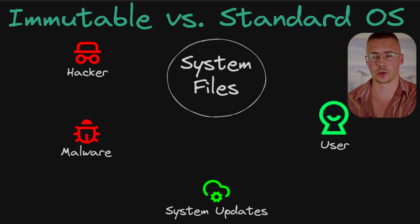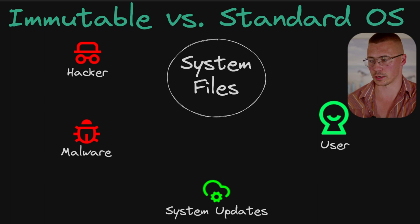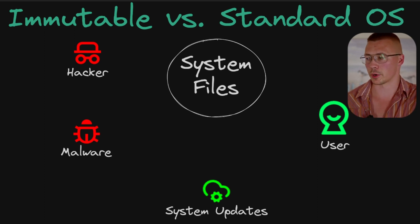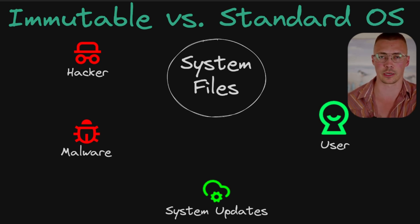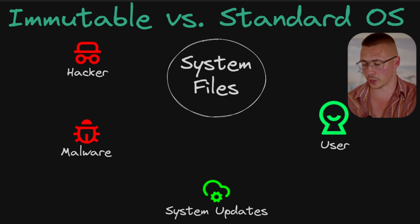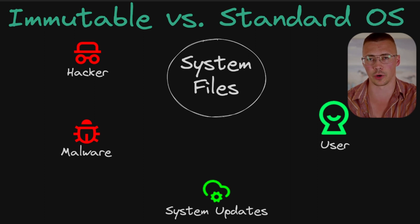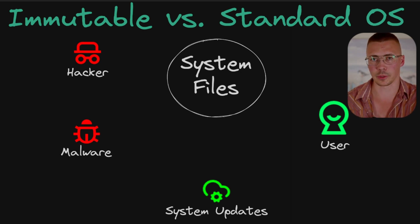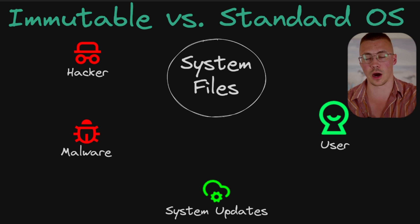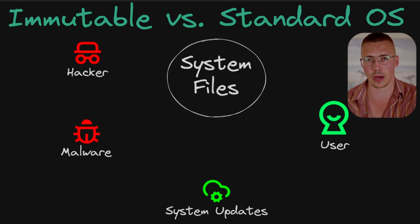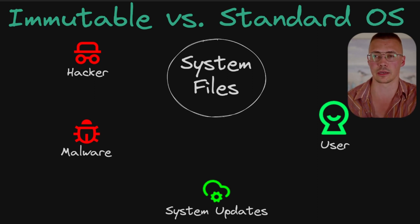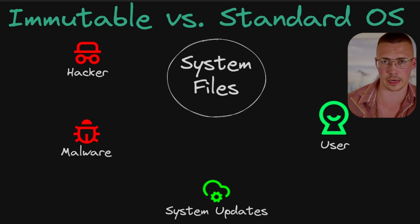I'm going to compare it to how a traditional operating system works — think of a standard Linux distribution or something like Windows — and then compare it to how immutable operating systems work, which right now only certain Linux distros have. I imagine at some point this will probably make it to Windows. I could see this being the future of how operating systems work, especially because it's such a powerful feature to keep things secure, help keep bugs down, make things more reliable, and also make things easier to update.